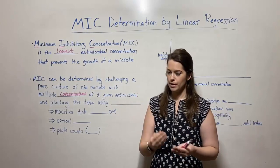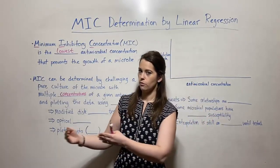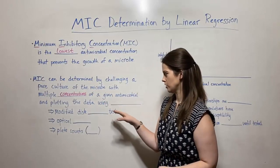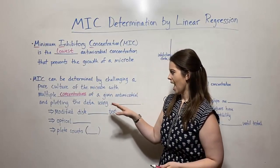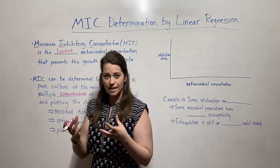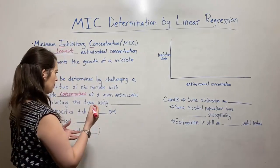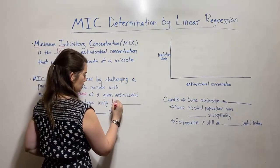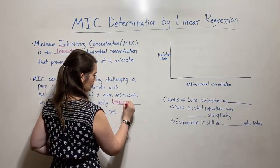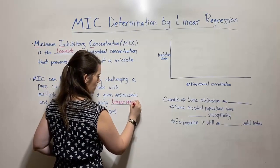So for example, 10 micrograms per mil, 20 micrograms per mil, 30 micrograms per mil, 40 micrograms per mil — multiple concentrations. And then you plot the inhibition data using a linear regression, which we'll talk more about in a second.